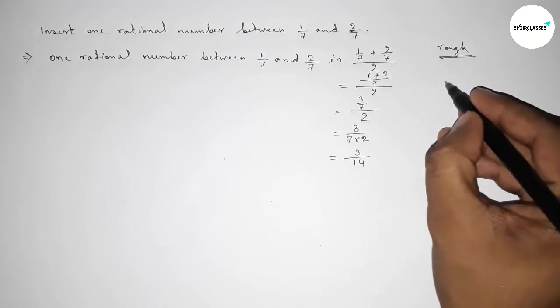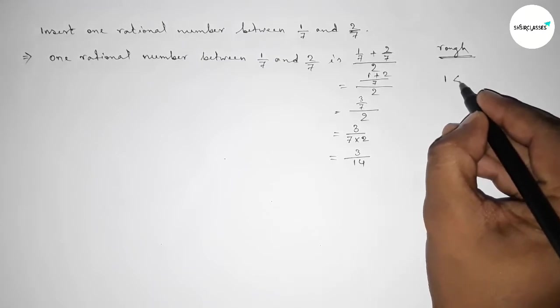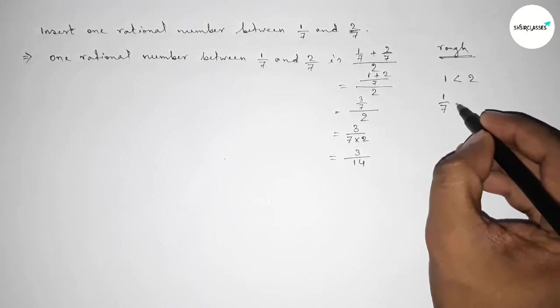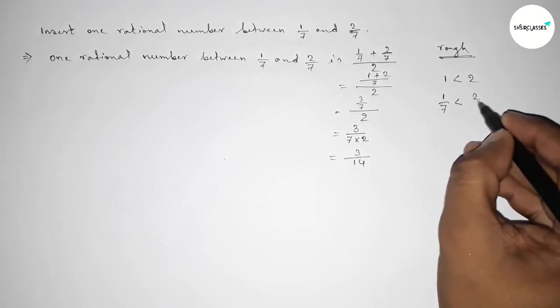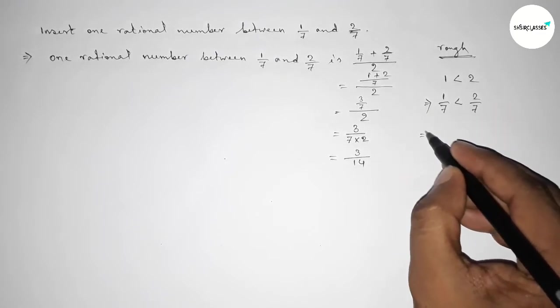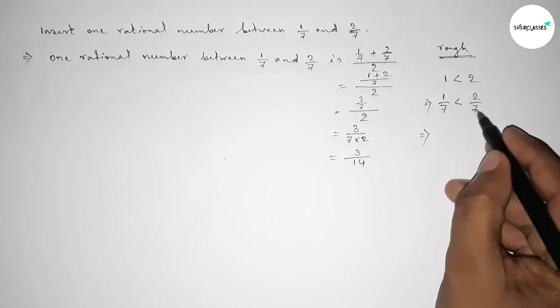Now dividing both numbers by 7, so 1/7 < 2/7. Now if you multiply both fractions up and down by 2, then this is 2/14 < 4/14. Between 2 and 4 we can write...